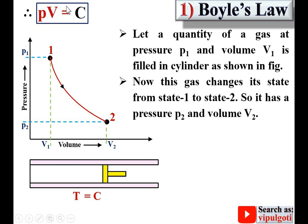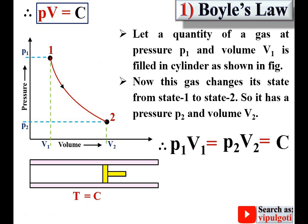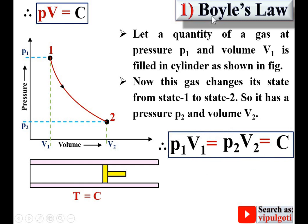Mathematically, applying Boyle's law at state 1: P1 times V1 equals constant. Applying it at state 2: P2 times V2 equals constant. Therefore P1V1 equals P2V2 equals constant. This is very important — for each and every state, the product of pressure and volume is always constant, provided temperature remains constant.